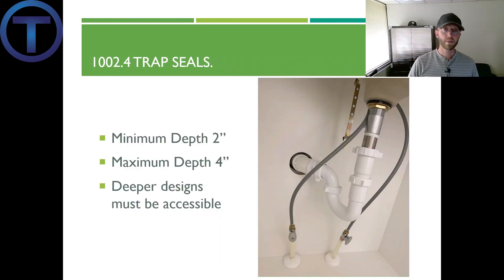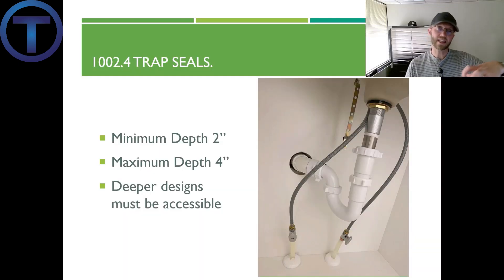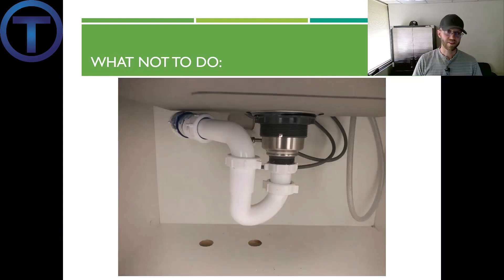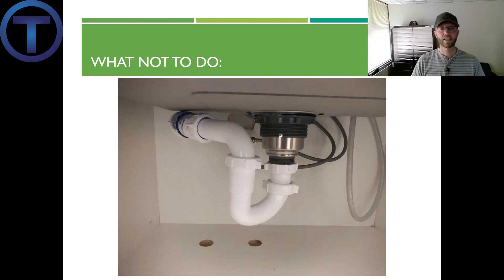Section 1002.4 talks about the trap seal — that is the liquid seal created by the bend of the trap. At a minimum it has to be two inches deep; at a maximum it can be as much as four inches deep. You can create a deep seal trap on a glue trap by removing the street 90 and adding a regular 90 and extending it down a little bit. Deep seal traps are required to be accessible. Sometimes that pipe comes out of the wall just a little bit too high, or the sink installed is really deep, and now we've got to flip a trap. This is actually not against code because you can have up to a four-inch depth for a trap seal, but it is not ideal.